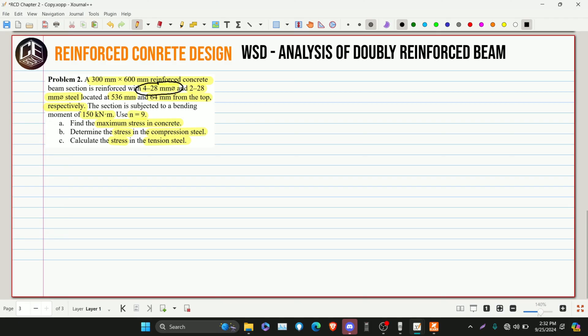The problem states 4-28 mm diameter bar and 2-28 mm diameter steel bar at 536 and 64 mm from the top, respectively. So the 536 is for this one, and this is for the other. It's obvious that the 4-28 mm diameter bar is for the tension steel. Because we need more steel for the tension fiber. So where we have more steel, that's the tension steel. And this one, with less steel, therefore this is for the compression fiber. This is the compression steel.